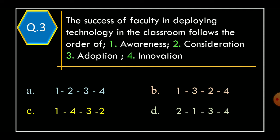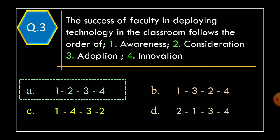Question 3: The success of faculty in deploying technology in the classroom follows the order of: 1) Awareness, 2) Consideration, 3) Adoption, 4) Innovation. Select the correct sequence. Option A: 1, 2, 3, 4. Option B: 1, 3, 2, 4. Option C: 1, 4, 3, 2. Option D: 2, 1, 3, 4. The correct option is Option A: 1, 2, 3, 4.